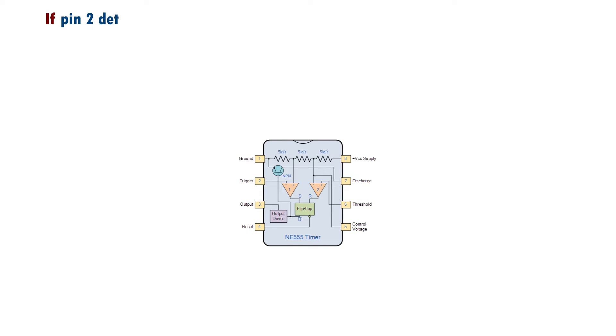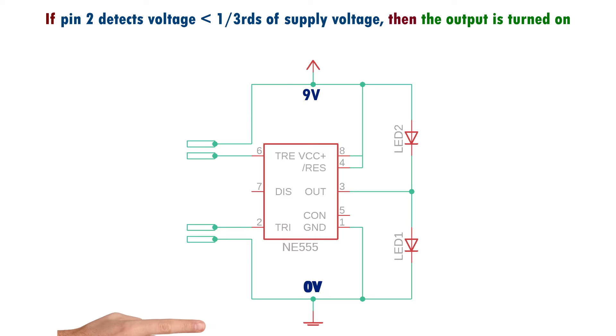The 555 timer IC is designed such that whenever pin 2 detects a voltage less than one-third of the supply voltage, it turns on the output. So when I touch both these contacts, the voltage at pin 2 will be near to 0 volts and because it's less than one-third of supply voltage, the output turns on.